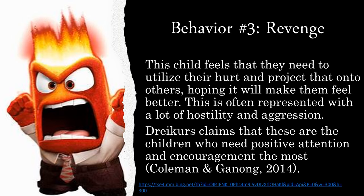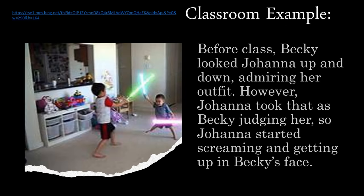The third mistaken goal is revenge. This child feels that they need to utilize their hurt and project that onto others, hoping it will make them feel better. This is often represented with a lot of hostility and aggression. Dreikurs claims that these are the children who need positive attention and encouragement the most. In this example, before class, Becky looked Joanna up and down, admiring her outfit. However, Joanna took that as Becky judging her, so Joanna started screaming and getting up in Becky's face. Joanna misinterpreted Becky's glances and decided to utilize hostility to show her dominance in the situation.